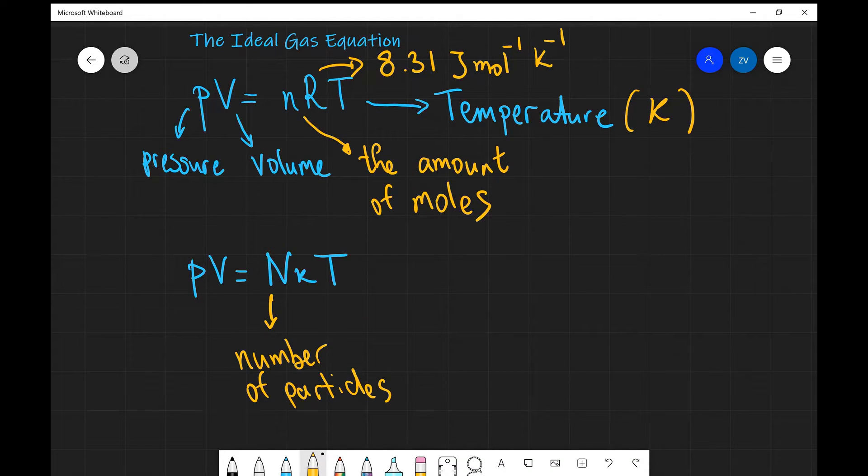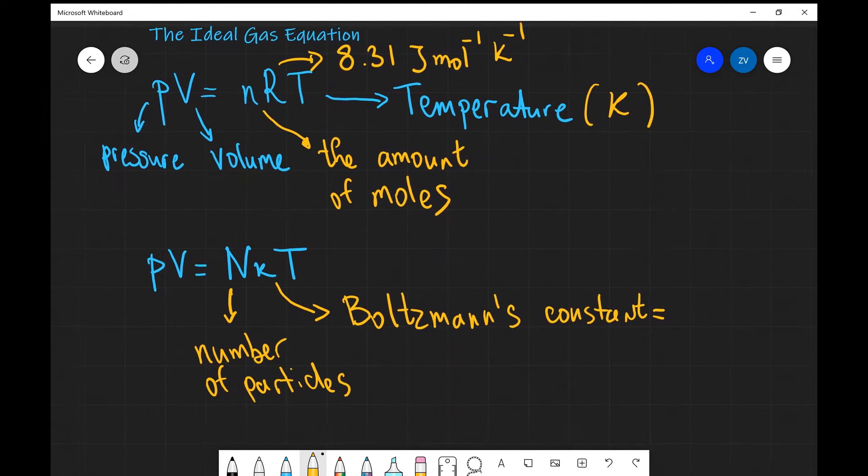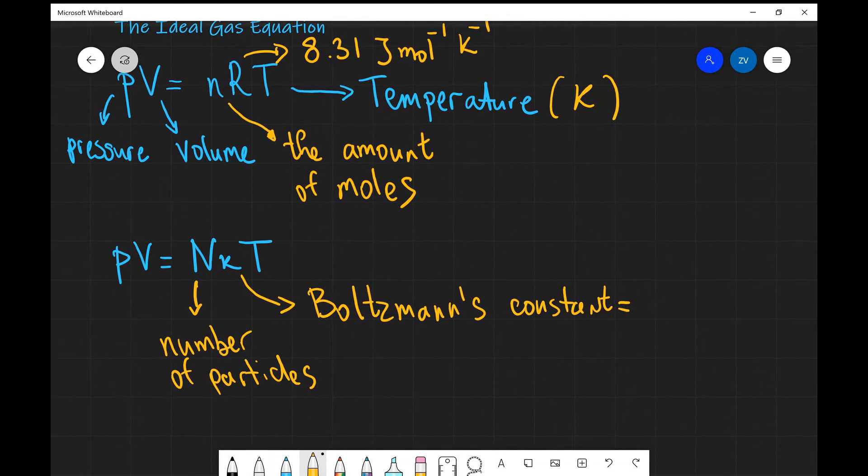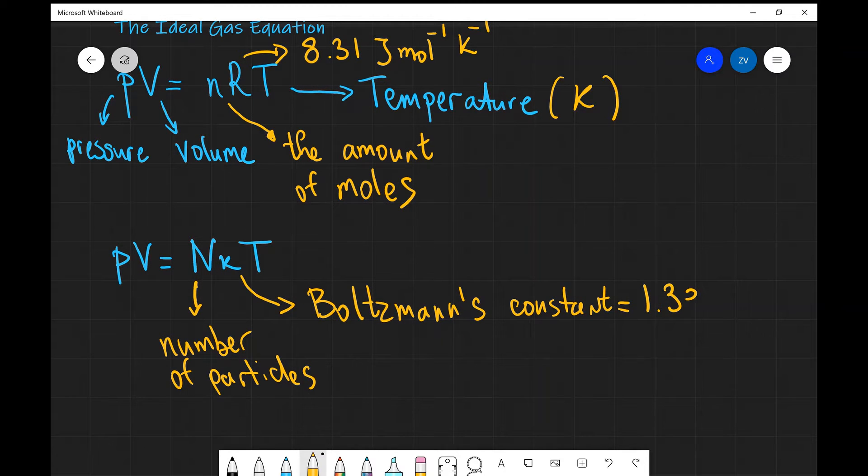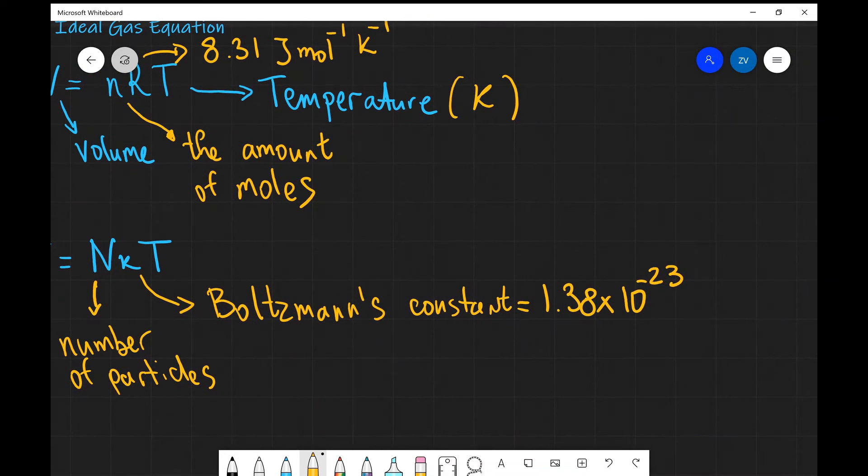K over here, which is the other difference from the above equation, is known as Boltzmann's constant. The value of this constant is 1.38 times 10 to the power of minus 23, so it's quite a small number, with units of joules per Kelvin.